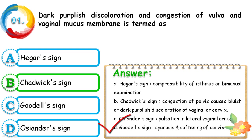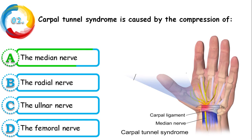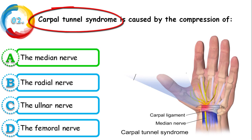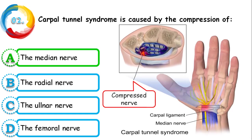Question 2: Carpal tunnel syndrome is caused by compression of which nerve — median, radial, ulnar, or femoral? The correct answer is the median nerve. Carpal tunnel syndrome is a common condition causing pain, numbness, or tingling in the hand and arm. It occurs when the median nerve is squeezed or compressed as it travels through the wrist area.